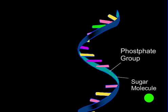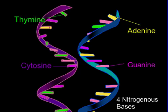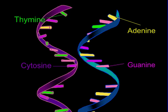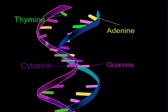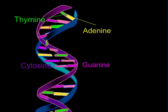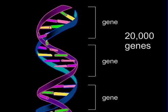Each nucleotide strand is composed of a phosphate group and a sugar molecule that are bonded together. Four nitrogenous bases then hold the nucleotide strands together. These four bases are adenine, thymine, cytosine, and guanine. Adenine links with thymine, and cytosine links with guanine.